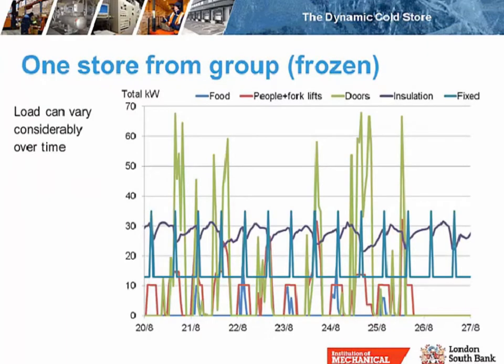Heat loads can also vary over time. The graph I showed before was an average over a long period, but heat loads can vary over a daily cycle — for example in terms of insulation — and the heat load from doors varies quite considerably. You need to take this into account and align your technology to certain times of the day. You really need to understand the heat loads in your cold store to be able to apply the very best technology.